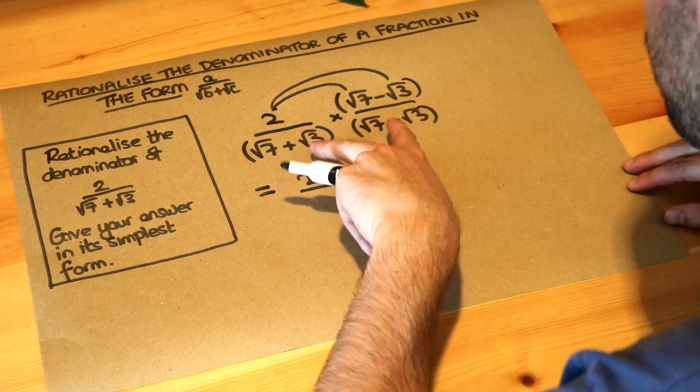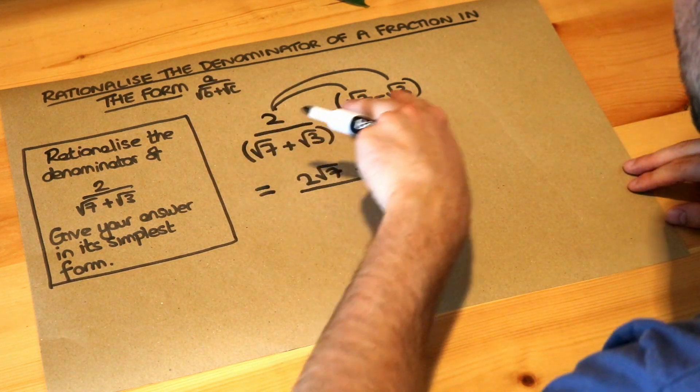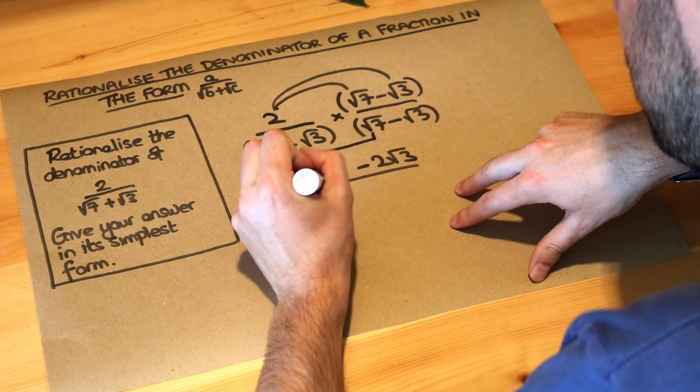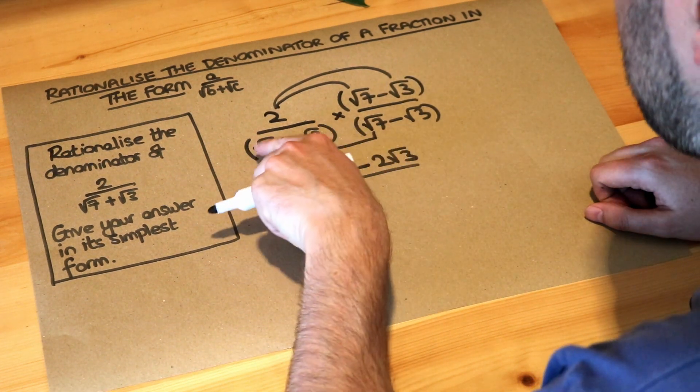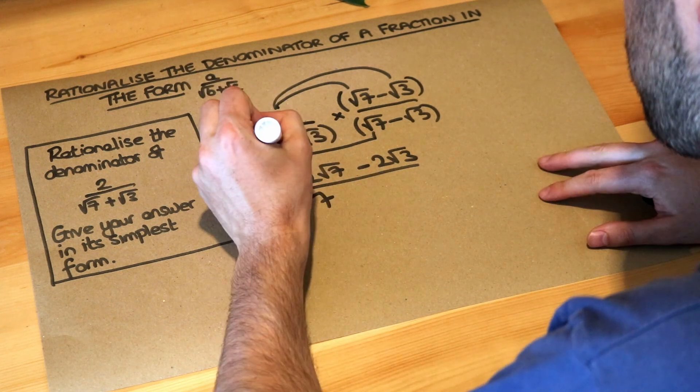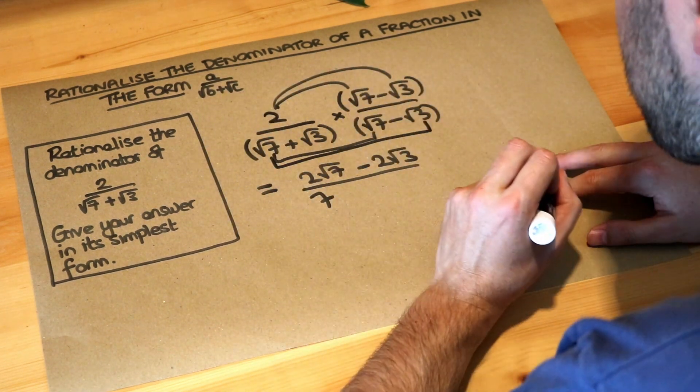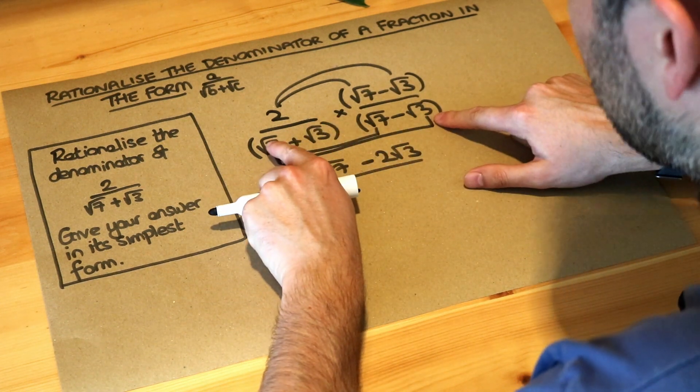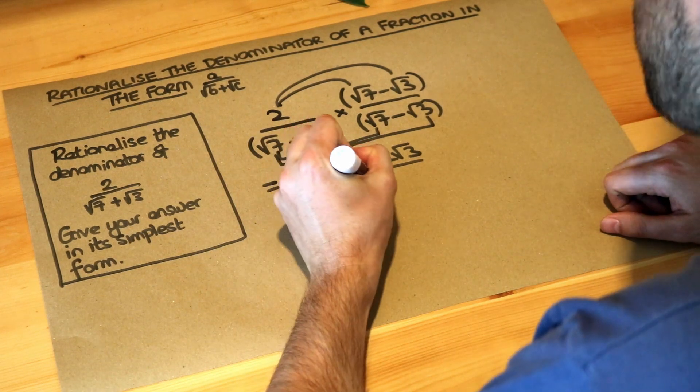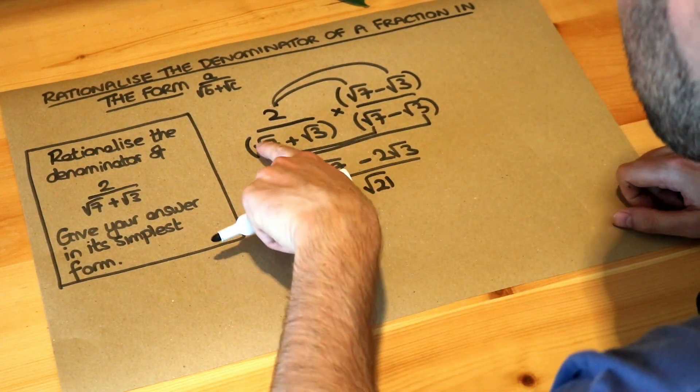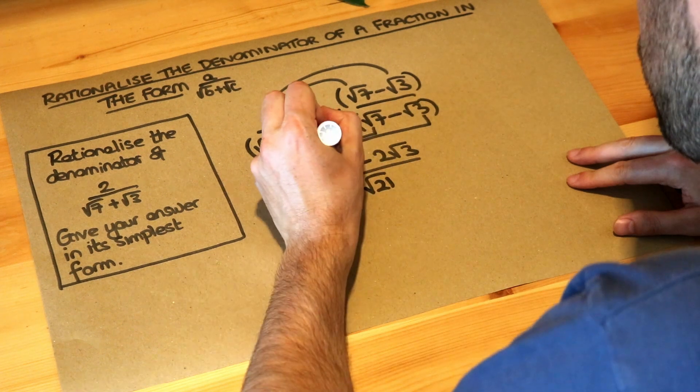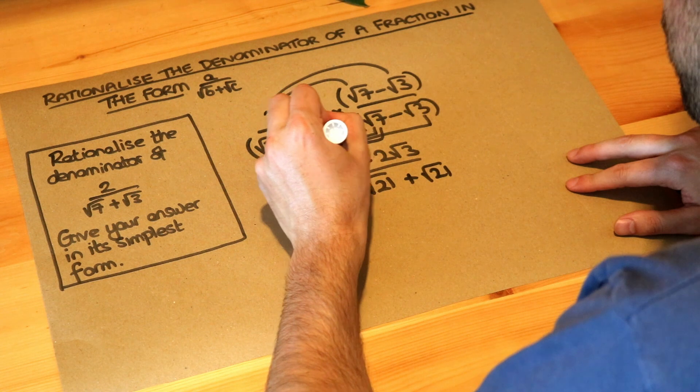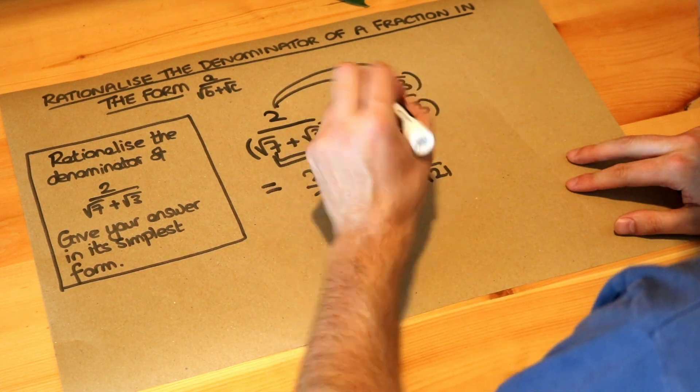And in the denominator, if we do it the slow way first, we have to do each thing in the first bracket times each thing in the second. So we do the root 7 times the root 7, which is 7. Any root times by itself will just be that same number, but without the root. We've got root 7 times negative root 3. Well, firstly, it's positive times negative, so it'll be negative. And we're multiplying two roots. Root 7 times root 3 will be root 21. You just multiply the 7 and the 3 together, but you keep that square root. Then we've got root 3 times root 7, which is plus root 21. And finally, we have root 3 times minus root 3. Well, positive times negative is negative.